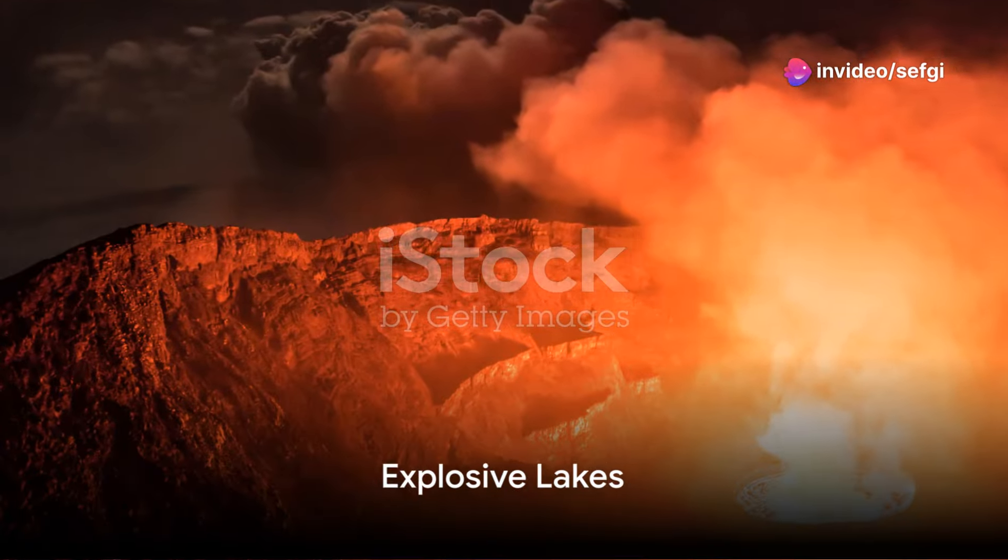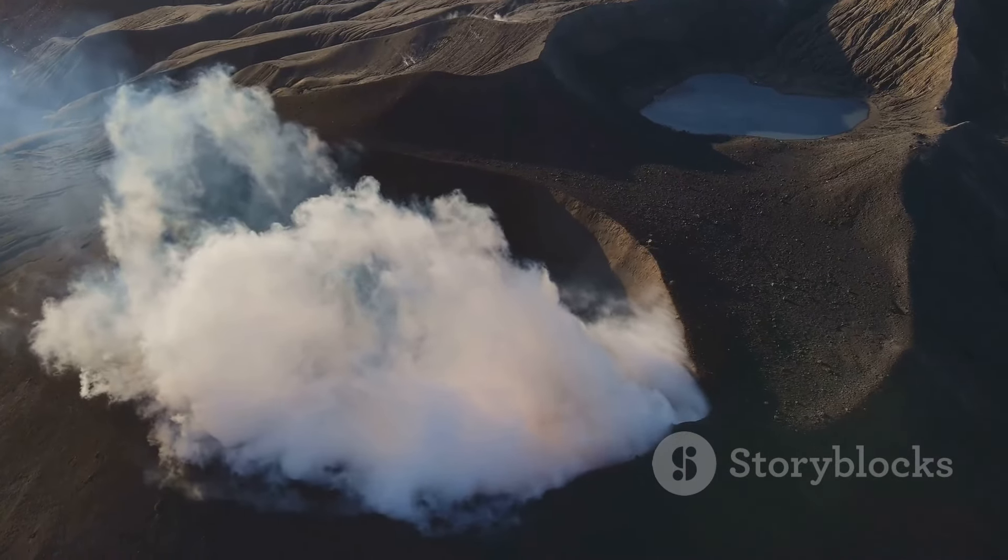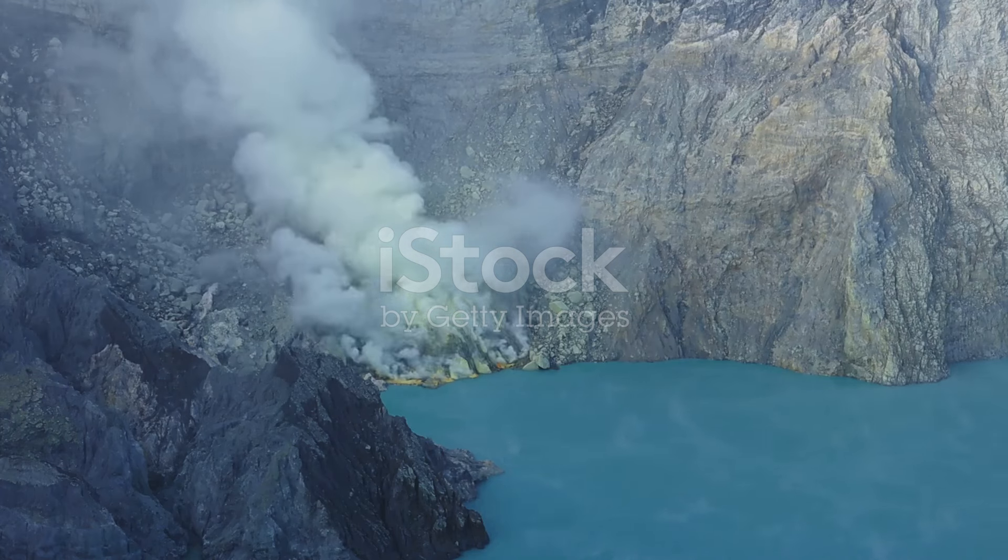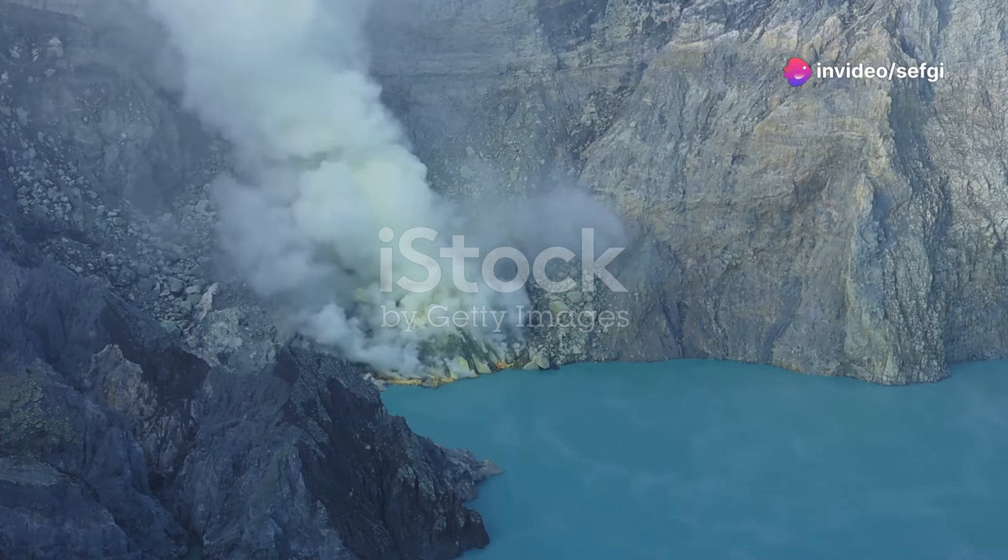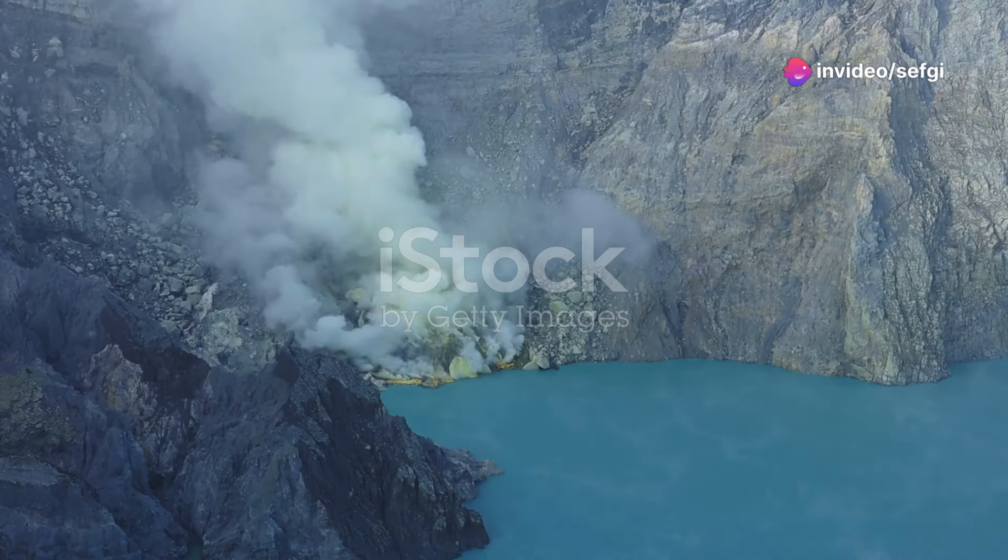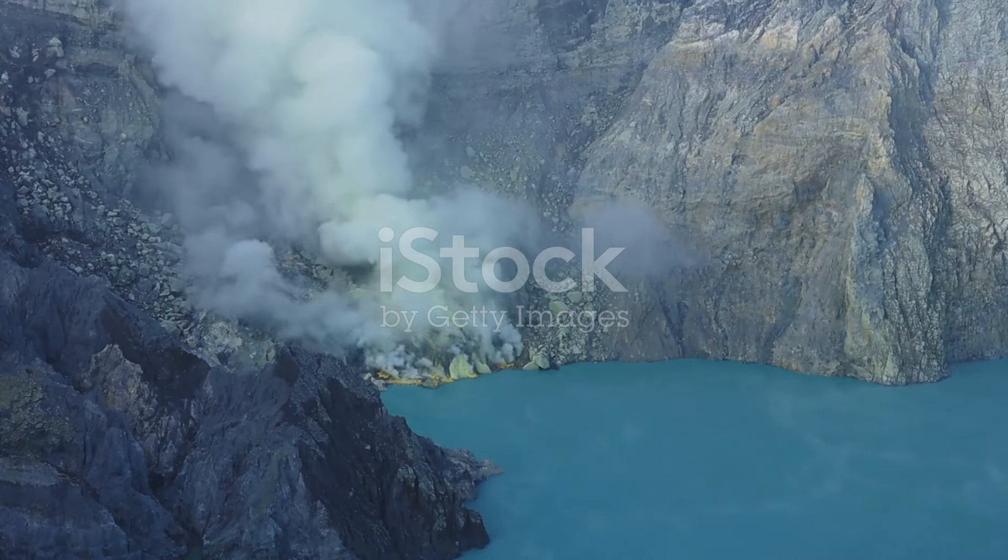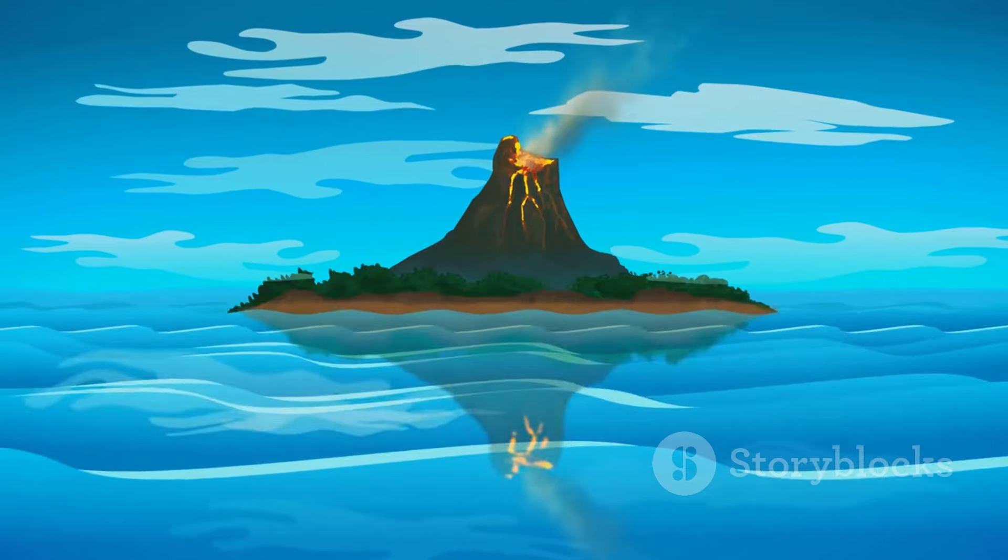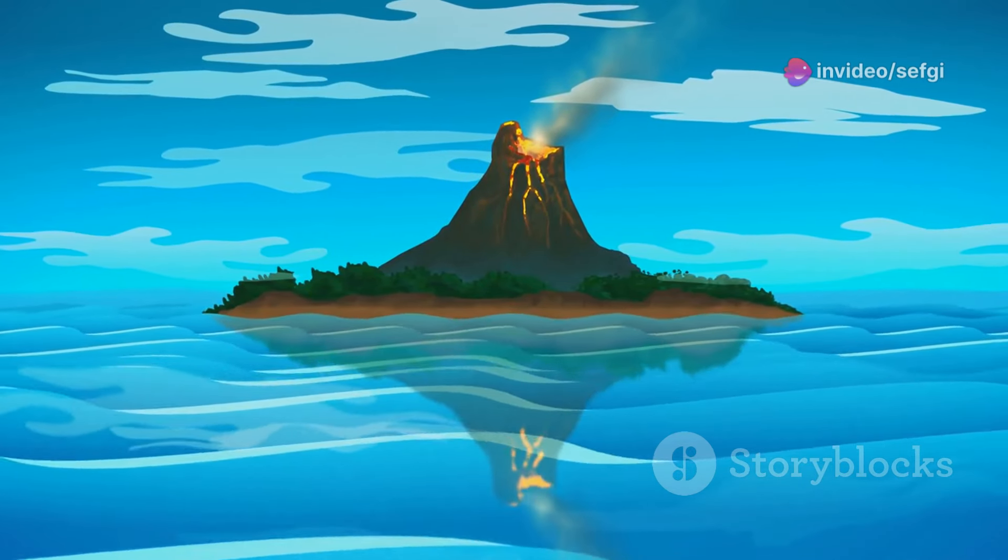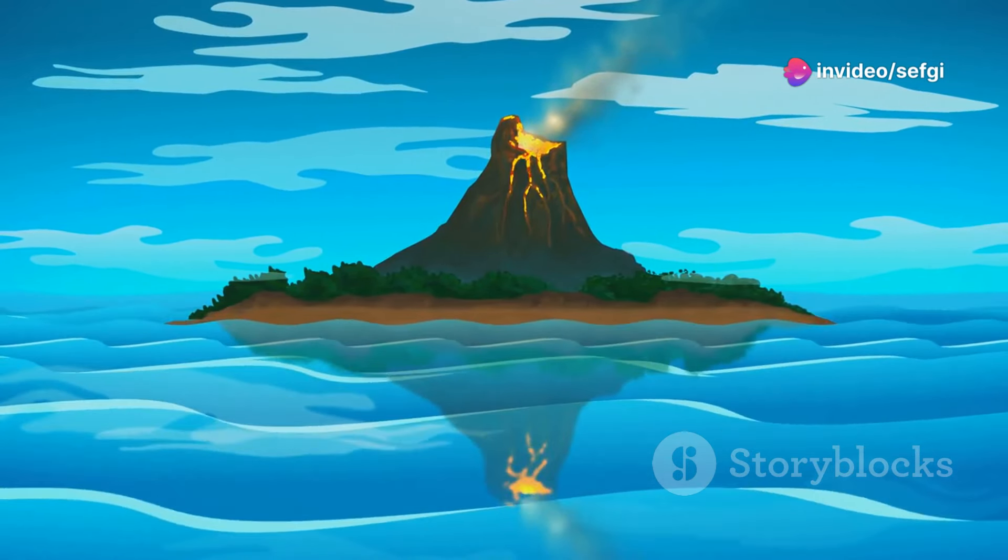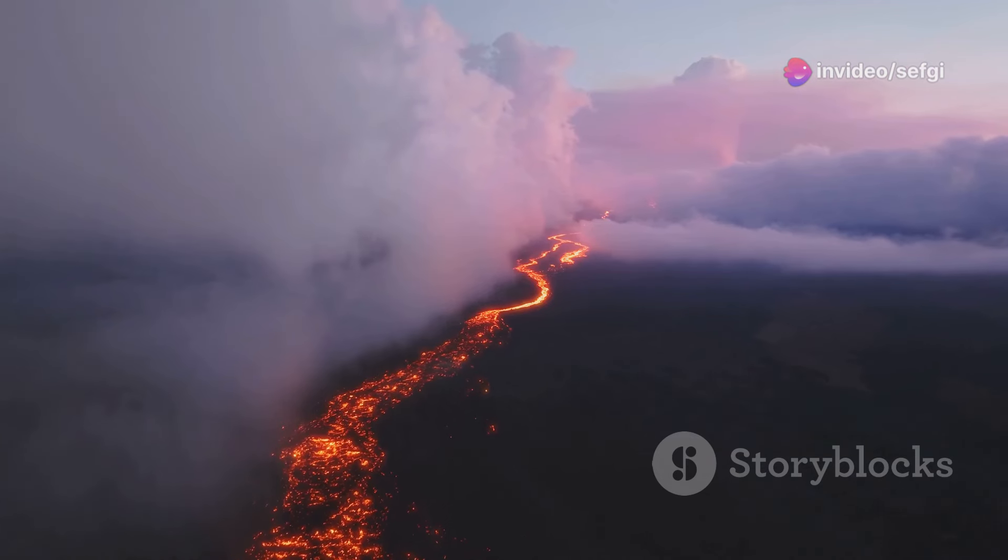Lakes are usually calm and serene, but some can explode with deadly force. Meet Lake Nyos and Lake Kivu. In the heart of Africa, these lakes harbor a deadly secret. They're saturated with dissolved carbon dioxide. This gas builds up over time, creating a ticking time bomb beneath the surface. Now imagine a volcanic eruption or a significant landslide occurring nearby. The disturbance could trigger a limnic eruption, a rare natural disaster causing the lake to explode and release a cloud of deadly gas.